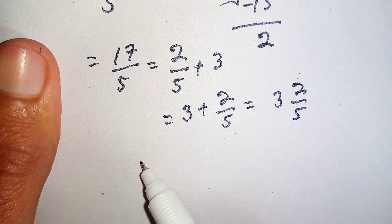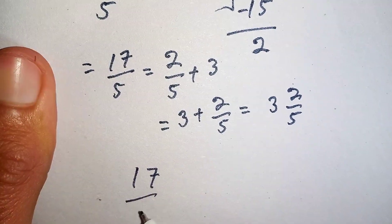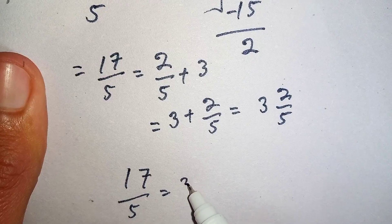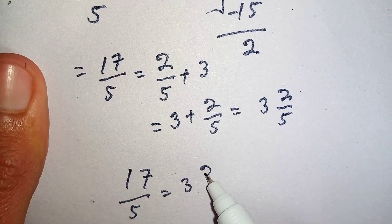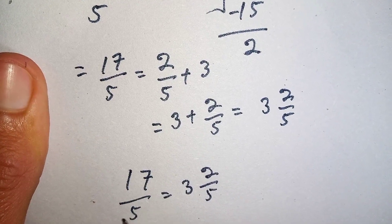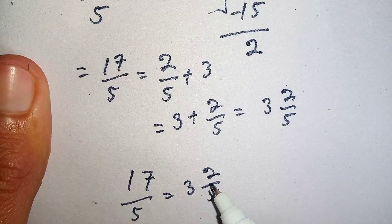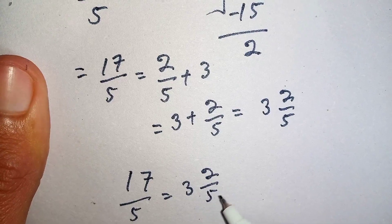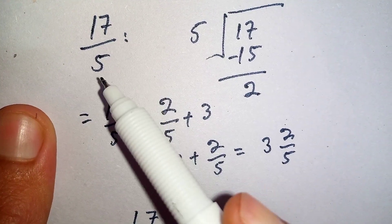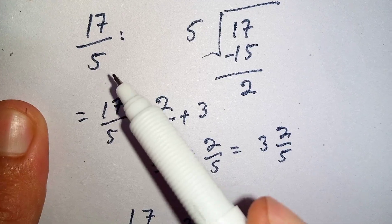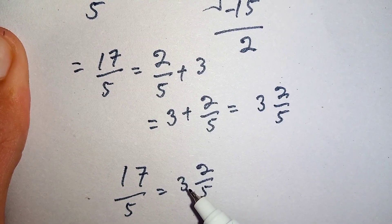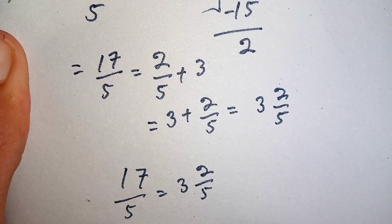So this is the mixed number form of 17 over 5. We can say that 17 over 5 is equal to 3 and 2 over 5. This is the improper fraction form and this is the mixed number form. When we convert 17 over 5 into a mixed number, the answer will be 3 and 2 over 5.